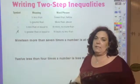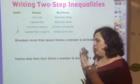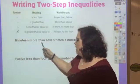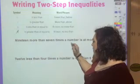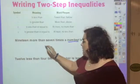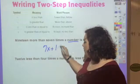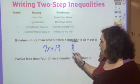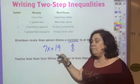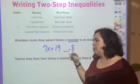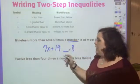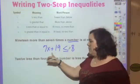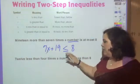Let's take simple phrases to find what inequality fits. Here: '19 more than seven times a number is at most 8.' The number is my variable, so seven times a number plus 19. 'At most eight' means it could equal eight but must be less than or equal to eight — that's where that sign comes in.